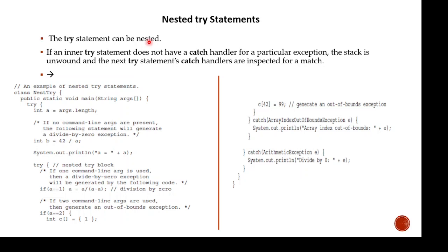A nested try means a try can be inside the block of another try. You can keep putting one try inside another. Each time a try statement is entered, the context of that exception is pushed onto the stack. If there is any exception, it is stored — pushed — into that stack. If an inner try statement does not have a catch handler for a particular exception, the stack is unwound.